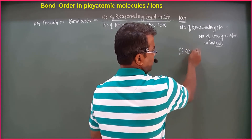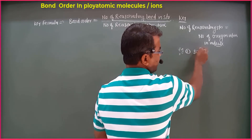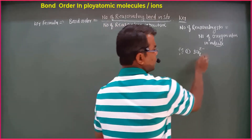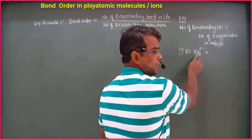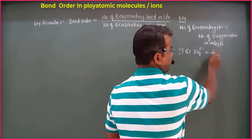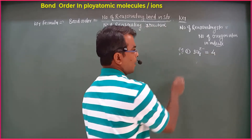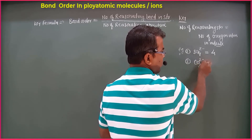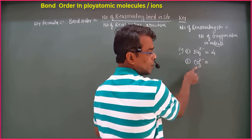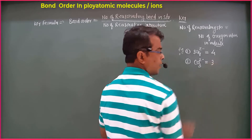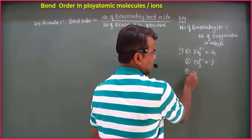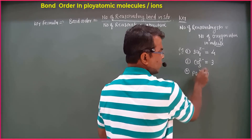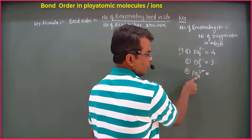For example, SO4²⁻: the number of resonating structures is 4. For MnO3²⁻, the number of resonating structures — the number of oxygen atoms — is 3. For MnO4²⁻, the number of resonating structures is 4.